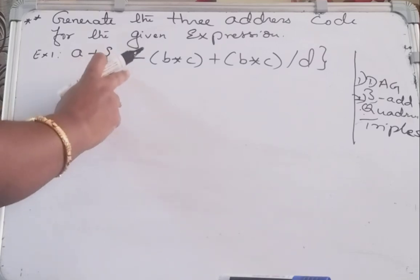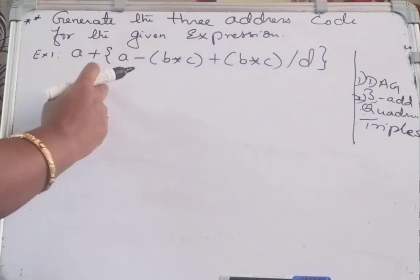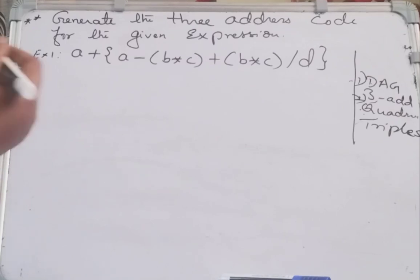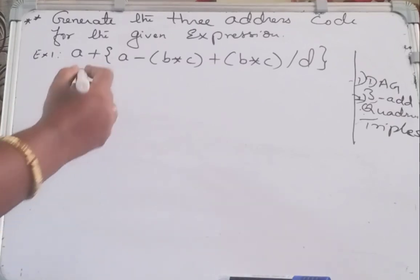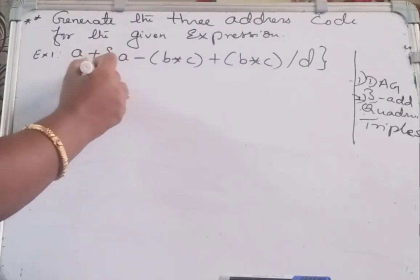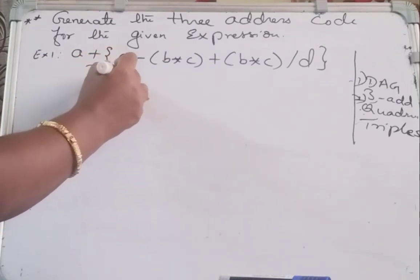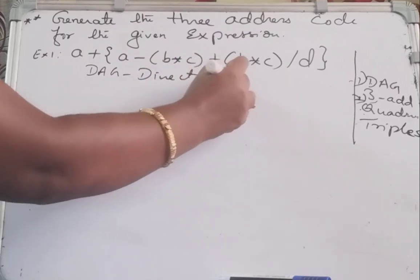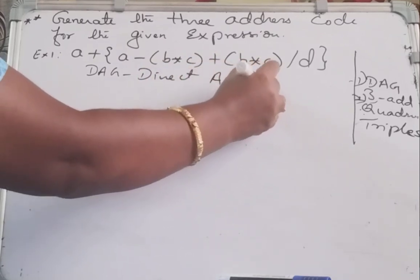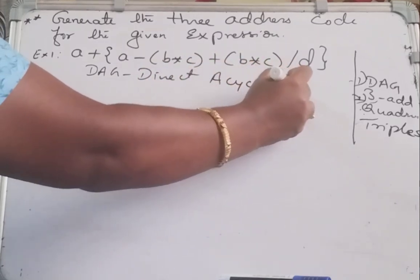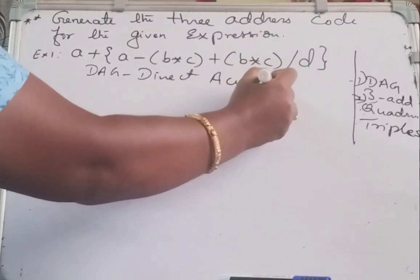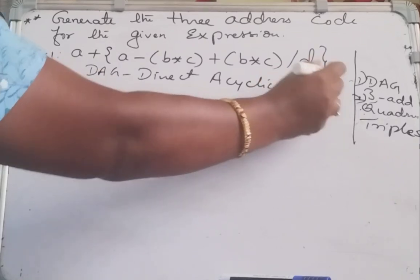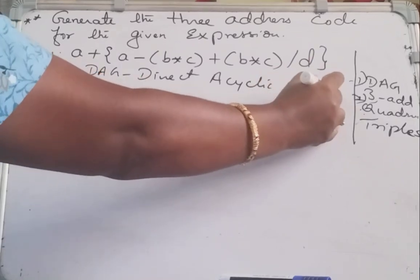The first step is to construct the syntax tree or the DAG. DAG means Direct Acyclic Graph. So for this only I have to construct the three address code instructions.